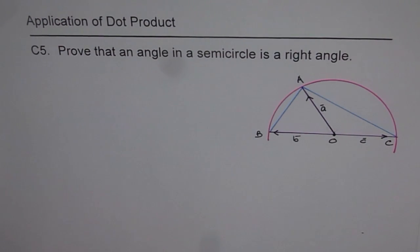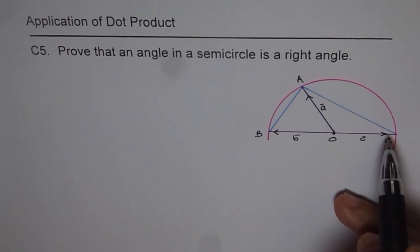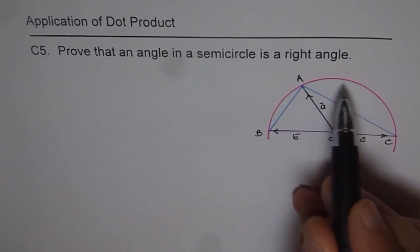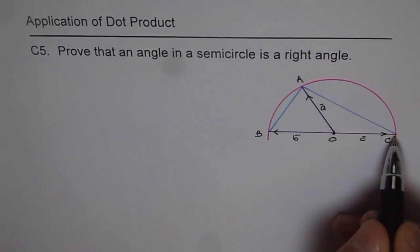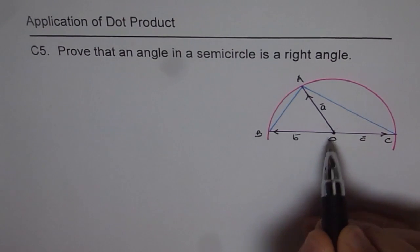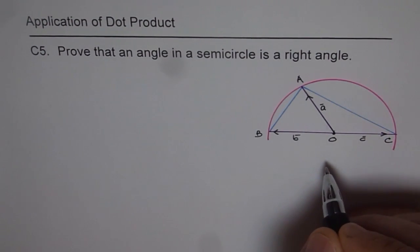Question C5 is: Prove that an angle in a semicircle is a right angle. So what we have here is a semicircle and we just took a point A in general any part of the circle, and that's the diameter BC going through origin O, and we are assuming at present that this is the origin of our space.